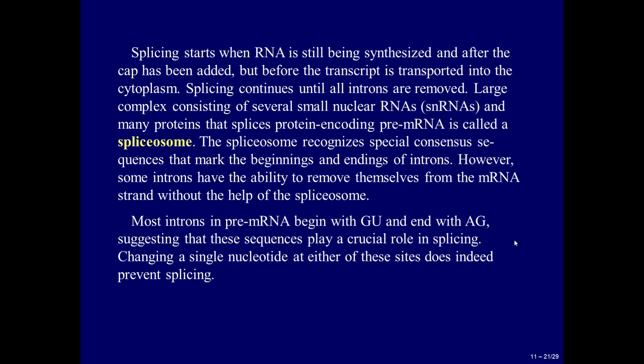Splicing starts when RNA is still being synthesized, after the cap has been added, but before the transcript is transported into the cytoplasm. Splicing continues until all introns are removed. The large complex consisting of several small nuclear RNAs and many proteins that splices protein-encoding pre-mRNA is called a spliceosome. The spliceosome recognizes special consensus sequences marking the beginnings and endings of introns. Most introns in pre-mRNA begin with GU and end with AG, suggesting these sequences play a crucial role in splicing. Changing a single nucleotide at either of these sites prevents splicing.